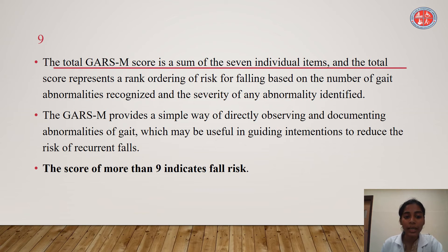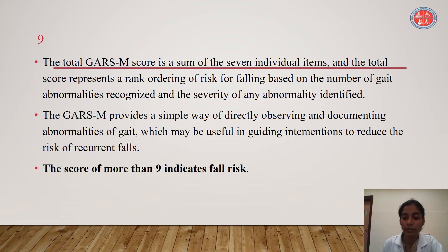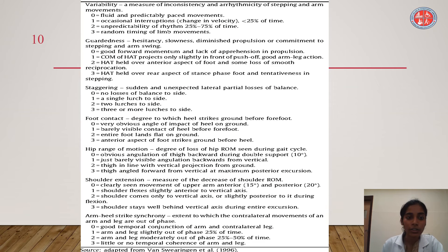The GARS-M provides a simple way of directly observing and documenting abnormalities of gait, which may be useful in guiding intervention to reduce the risk of recurrent falls. A score of more than 9 indicates a fall risk. The modified version of the GARS scale includes 7 domains scored 0, 1, 2, and 3.